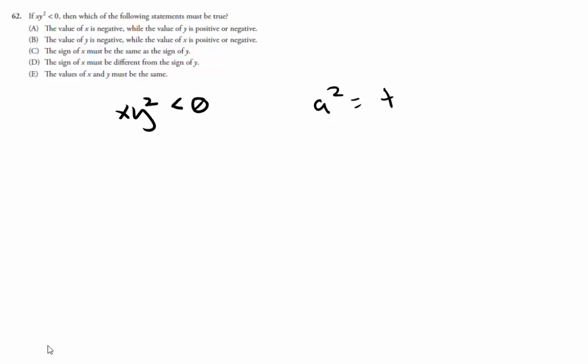Therefore, x times a positive number being less than 0 must mean that x is less than 0.